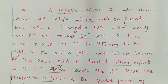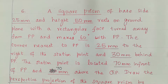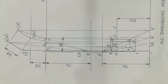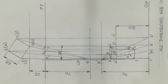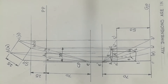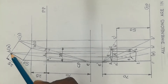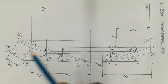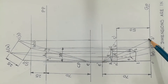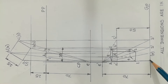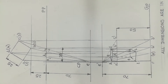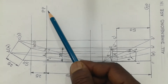The question is about a square prism. The answer diagram appears like this. This view is called top view. The top view is exactly the front view. Front view is drawn above the GP. GP is the ground plane line. PP is the picture plane line.